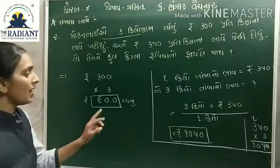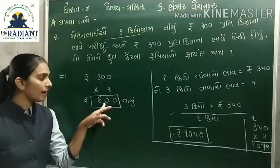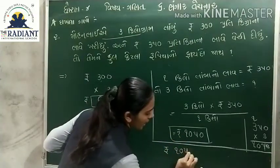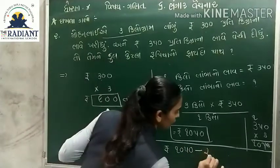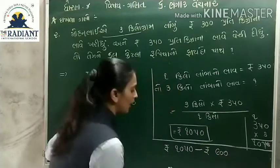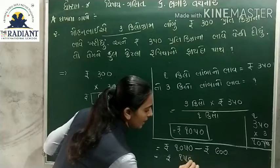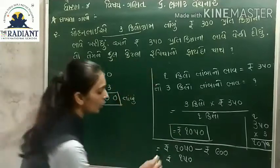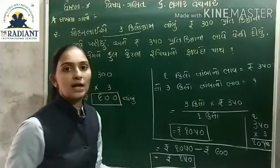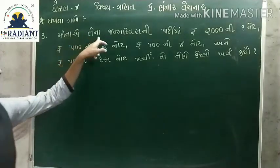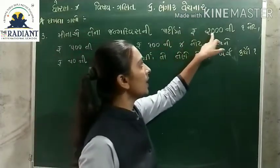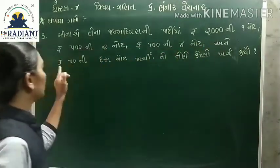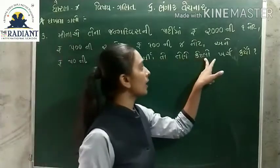ટેમને 1,050 રૂ. માં વેચ્યું. ટાંપુ 1,150 માં ખરીદ્યું હતું, અને 150 રૂ. ના ભાવે વેચ્યું. ટેમને કેટલા રૂ. નો ફાઇદો (profit) થયો?